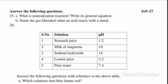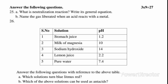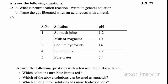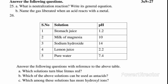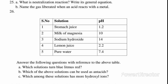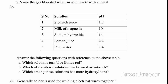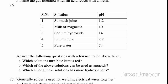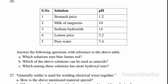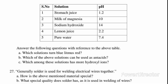3-mark questions. Question 25A: What is a neutralization reaction? Write its general equation. Answer: The formation of salt and water by the reaction between acids and bases is known as a neutralization reaction. Acid + Base → Salt + Water. B: Name the gas liberated when an acid reacts with a metal. Answer: Hydrogen gas is liberated. Question 26: A. Which solutions turn blue litmus red? Answer: Tomato juice and lemon juice. B. Which of the above solutions can be used as antacids? Answer: Milk of magnesia. C. Which among these solutions has more hydroxyl ions? Answer: Sodium hydroxide.